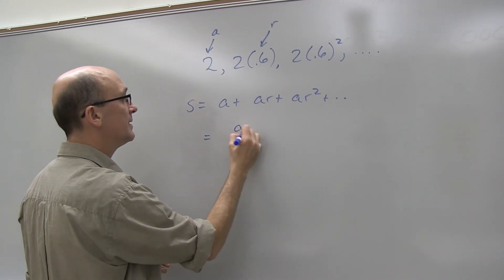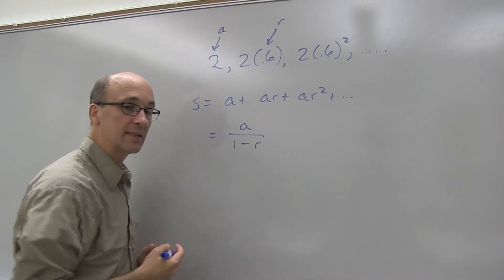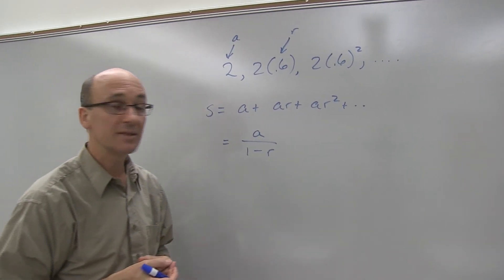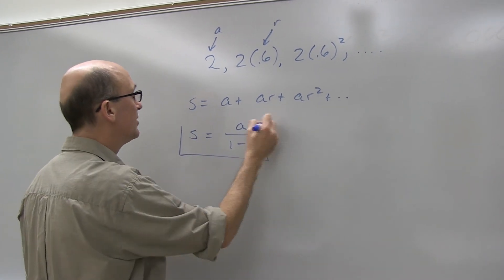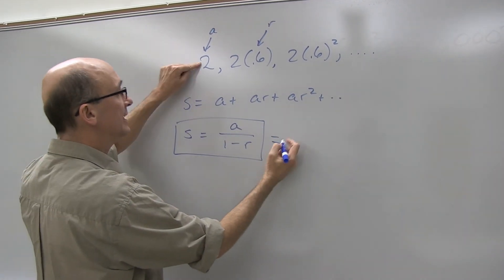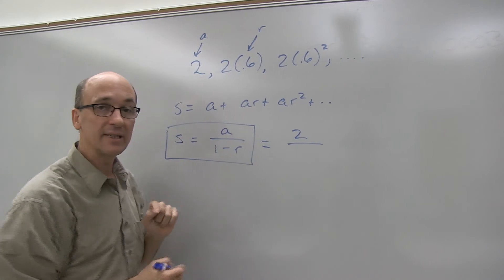We just worked out this answer. That's what that derivation was on the table with the paper. S is equal to A over 1 minus R. So we can plug in, in this particular story, A is 2, R is 60% or 3 fifths.